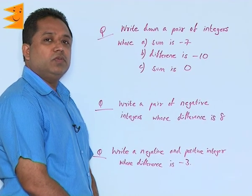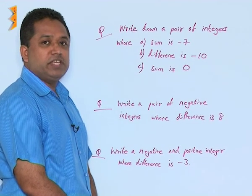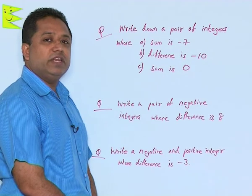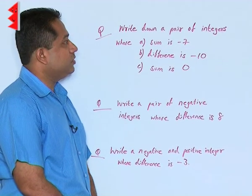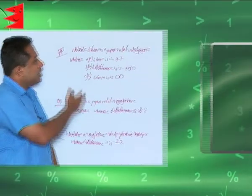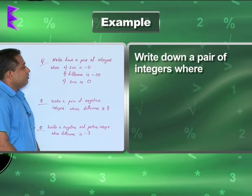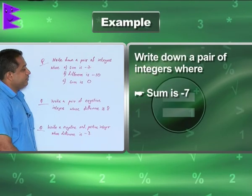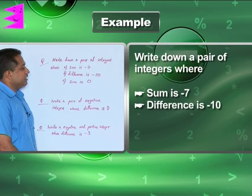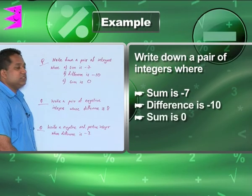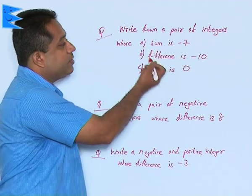Next, we are going to look at some questions based on addition and subtraction of integers. Here are some word problems. Write down a pair of integers: first part, whose sum is minus 7; second part, difference is minus 10 and the sum is 0. Let us examine each of these conditions separately.